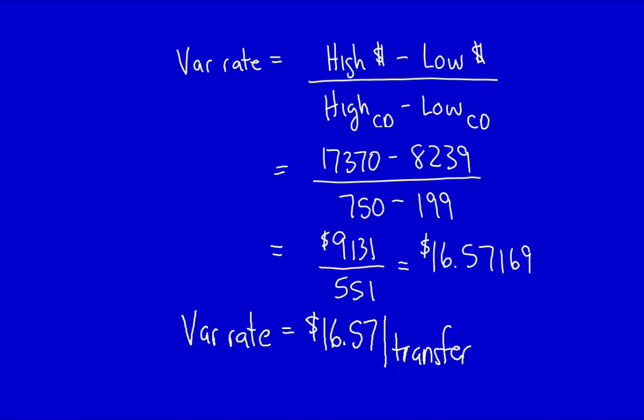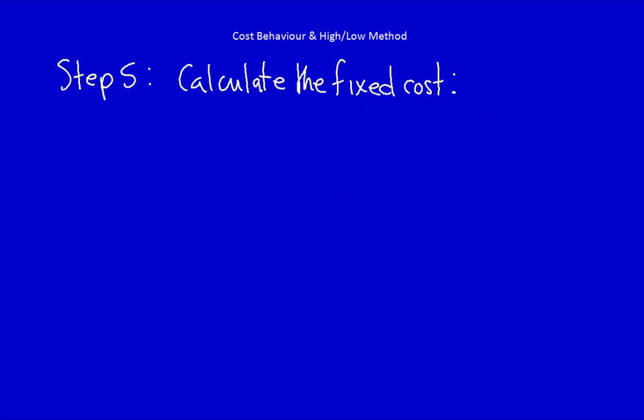Step 5: Calculate the fixed cost using the variable rate that you just calculated in Step 4. How do we do that? We use our cost function. Total cost is equal to variable cost times quantity plus the fixed cost. In order to use this formula, we have to choose to use either the high numbers that we have, which was $17,370 and 750 transfers, or the low numbers, $8,239 and 199 transfers. I'm going to use the high number, but you could use either. Now, using the cost formula, substitute in the numbers that you've chosen.